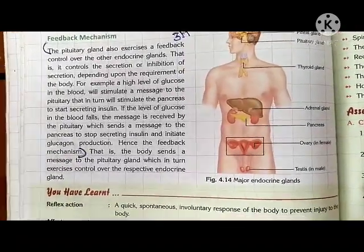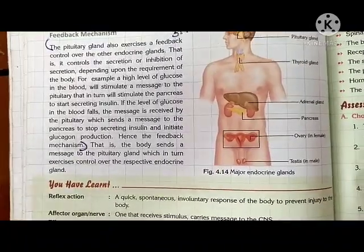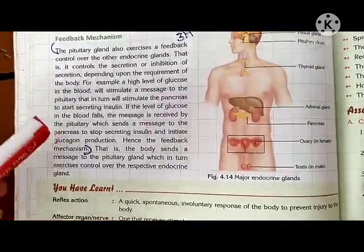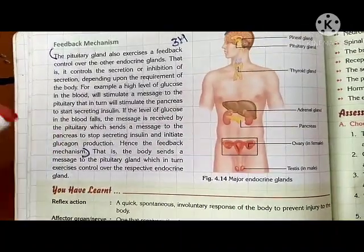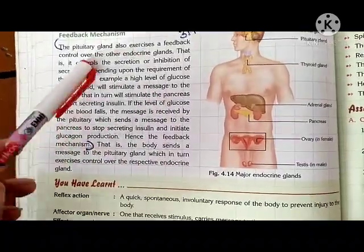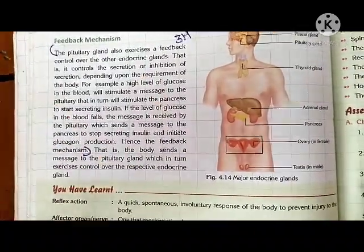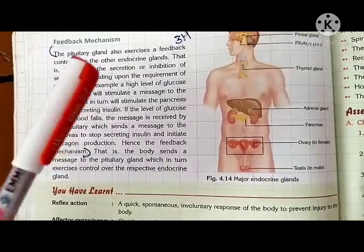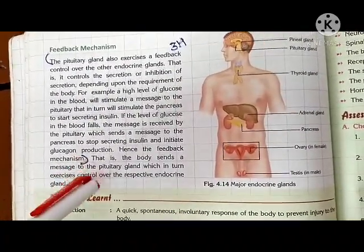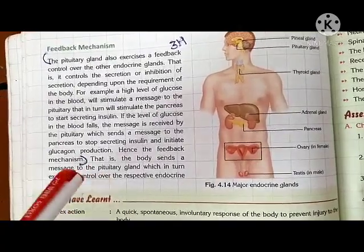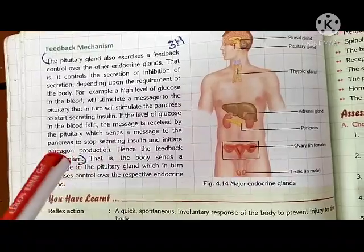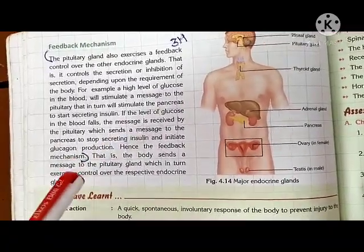The pituitary gland, as the master gland present in the brain, governs the function of all the remaining endocrine glands through feedback mechanism because it is connected to our brain. Students, if you have any doubts you can send me a message. Learn this chapter properly — I will send question and answers in the next session.